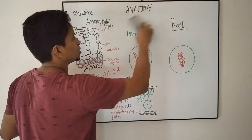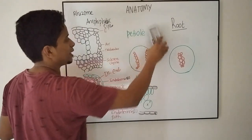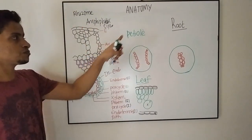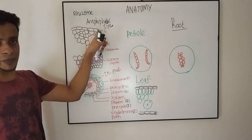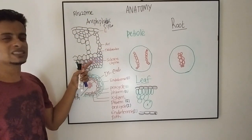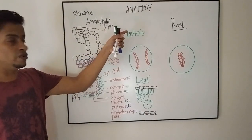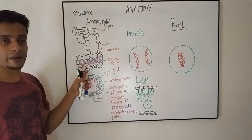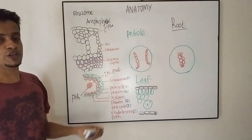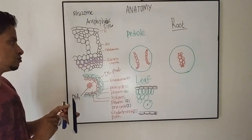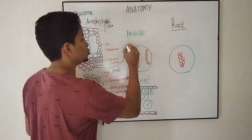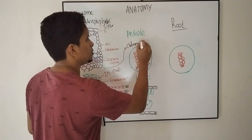Moving to the next section, that is the anatomy of the petiole, which is somewhat similar to the anatomy of the rhizome, having outer epidermis and an outer cortex. But here, sclerenchymatous structures are very few, and the parenchymatous inner cortex is modified into chlorenchyma. This inner zone is modified into chlorenchyma in the petiole.